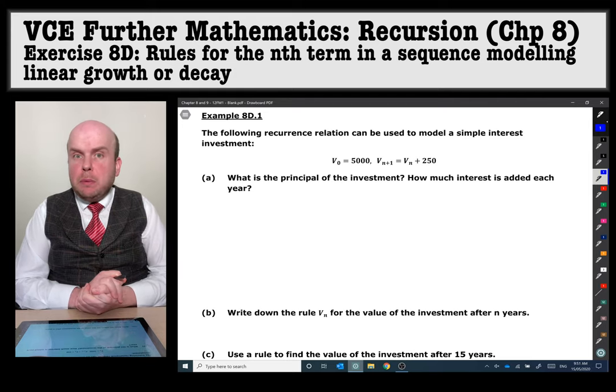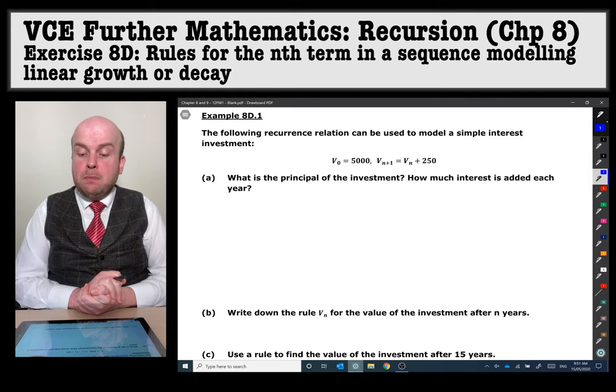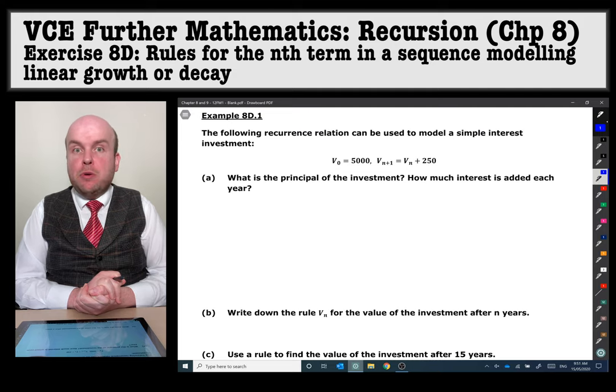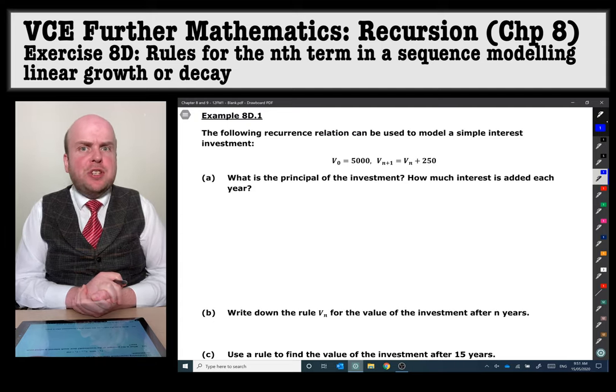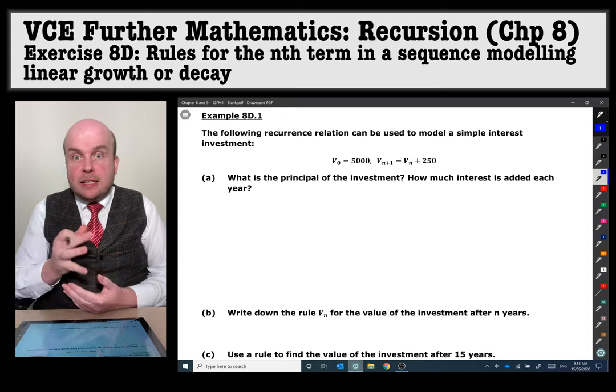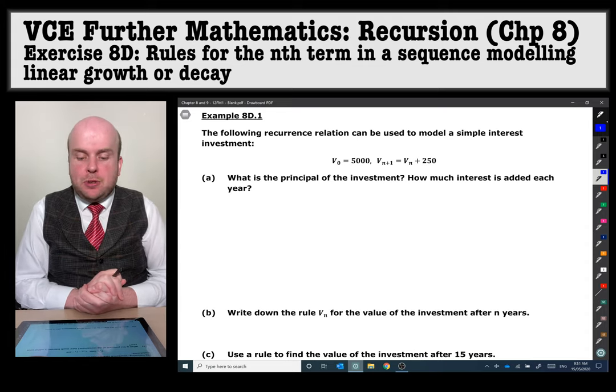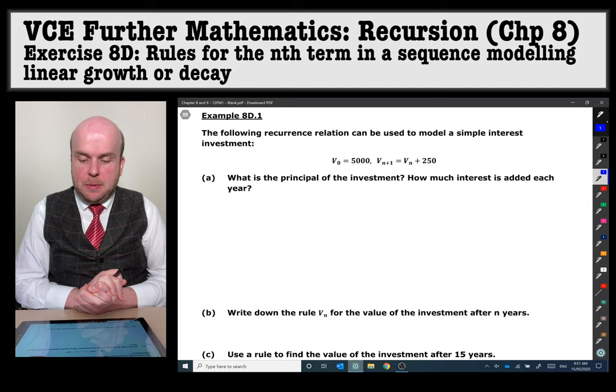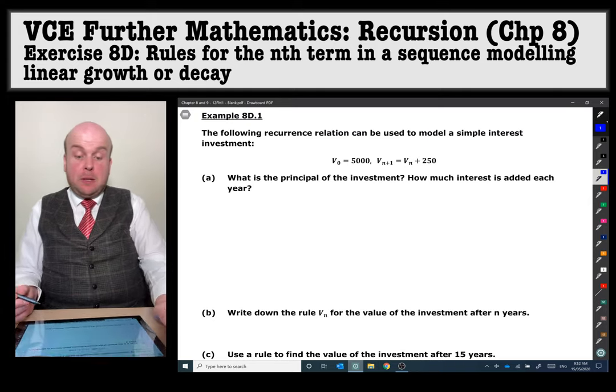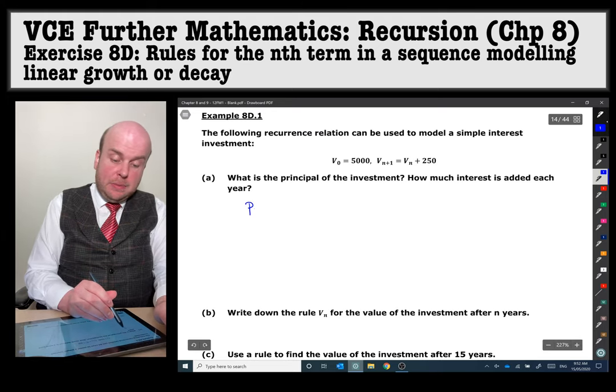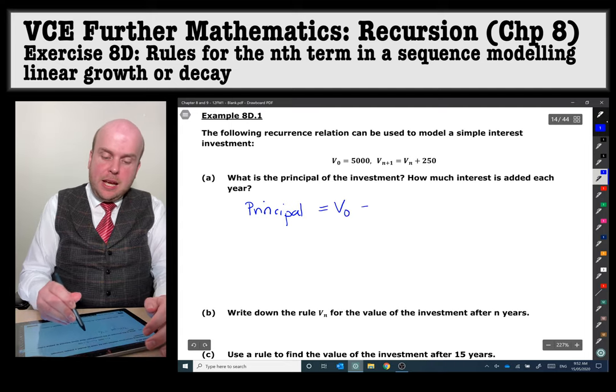Example 8d.1. The following recurrence relation can be used to model a simple interest investment. We've got V0 is equal to 5,000, Vn+1 is equal to Vn plus 250. Remember that Vn+1 just means the next one along. What is the principal of the investment? Well the first thing to be aware of is that the principal will be that initial investment. So I'm going to write principal is equal to V0 and that is equal to five thousand dollars.